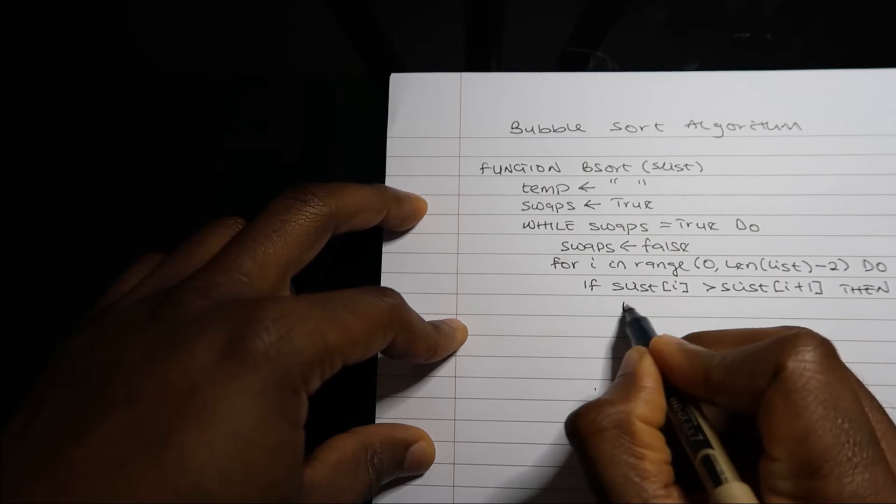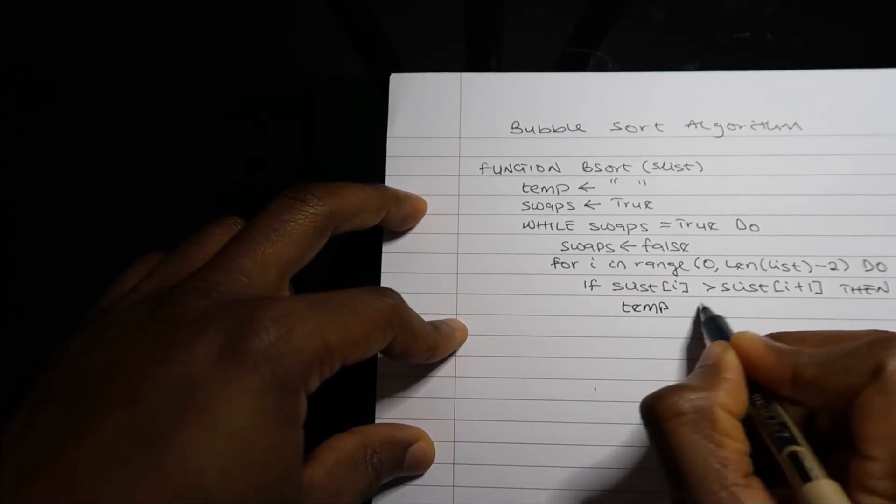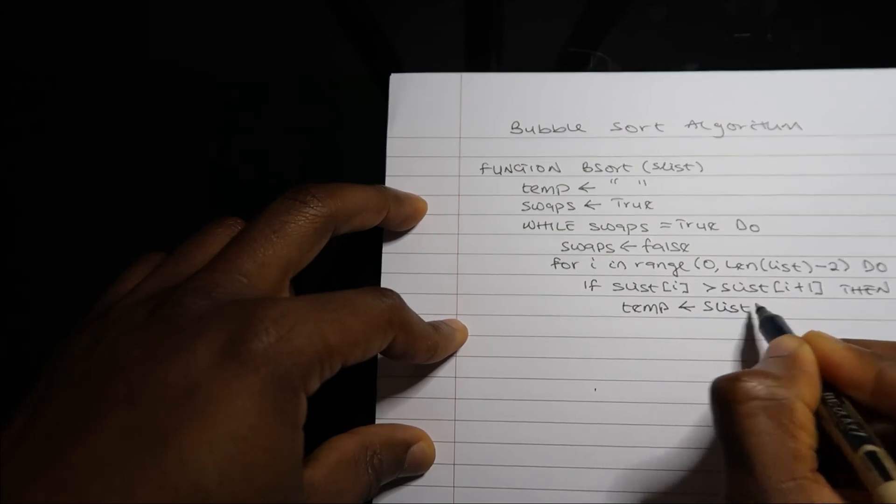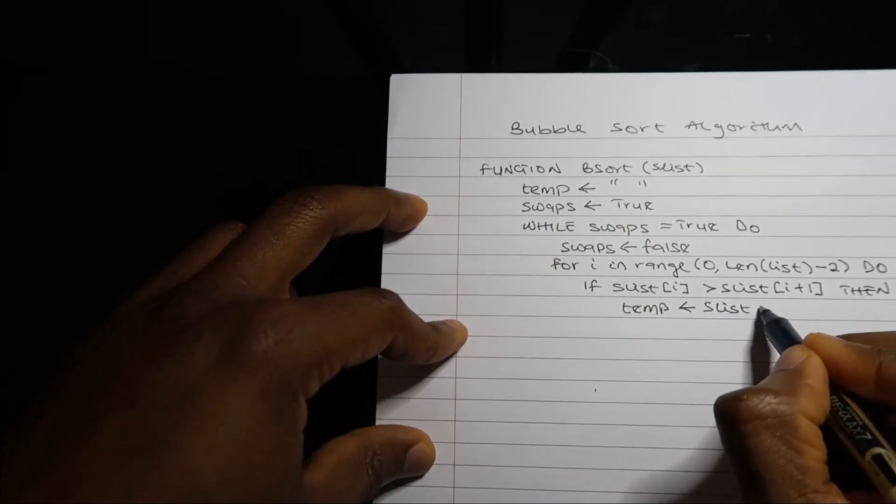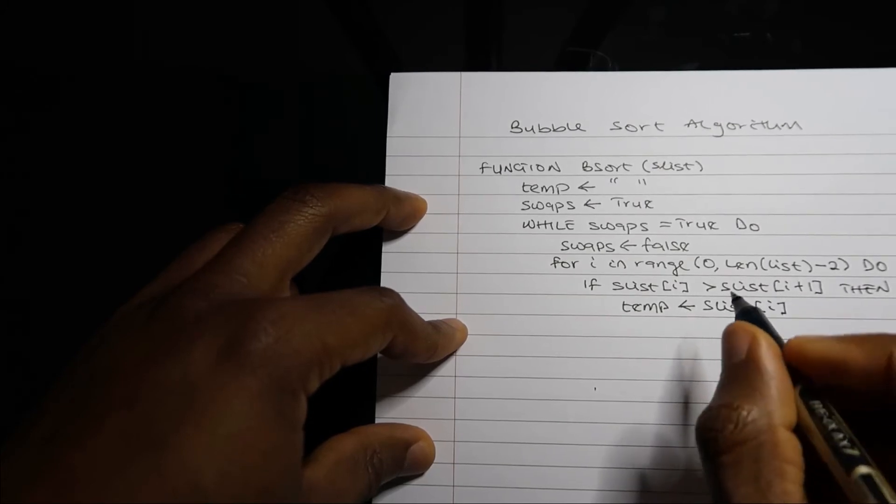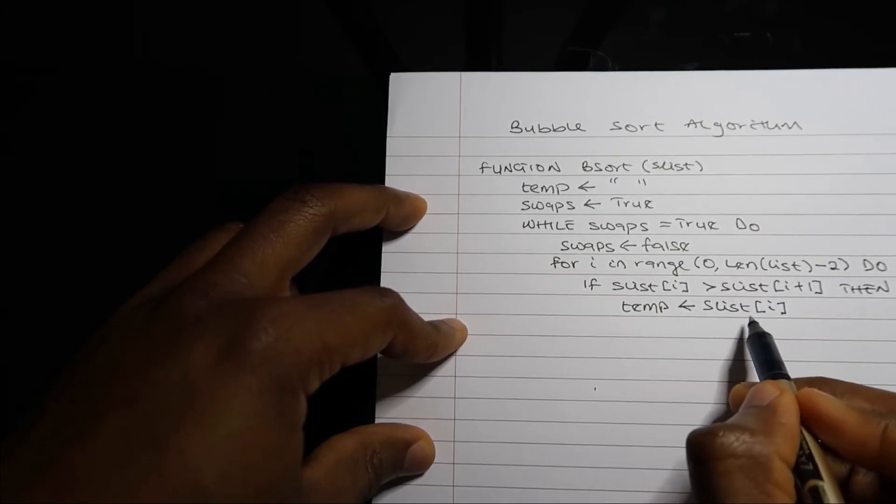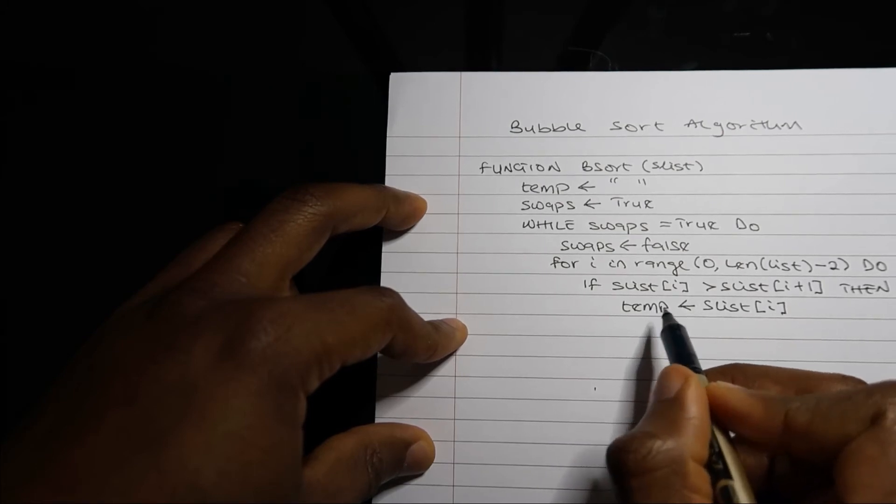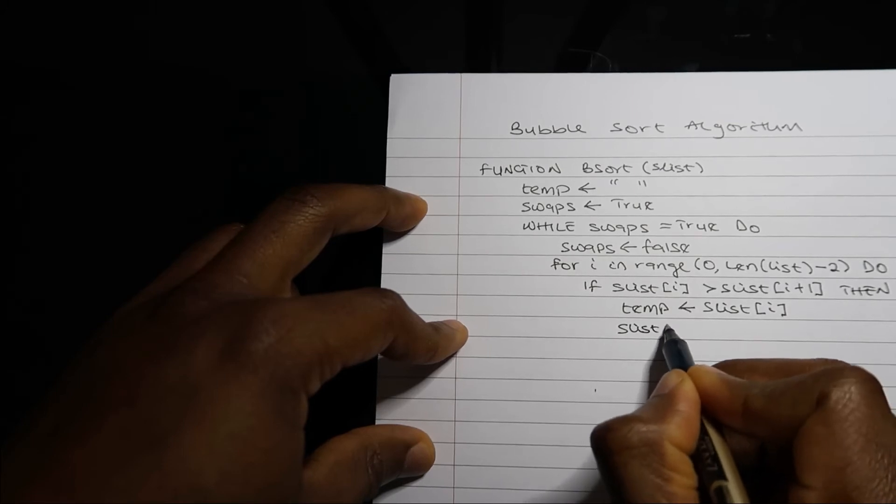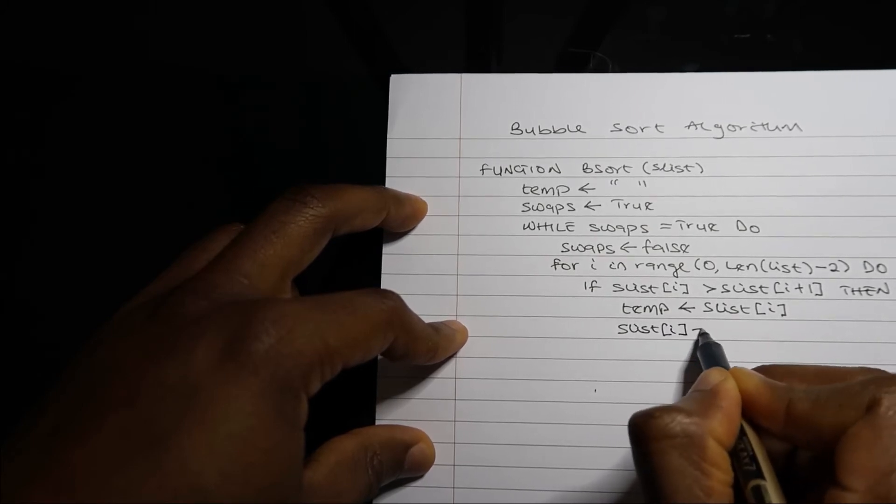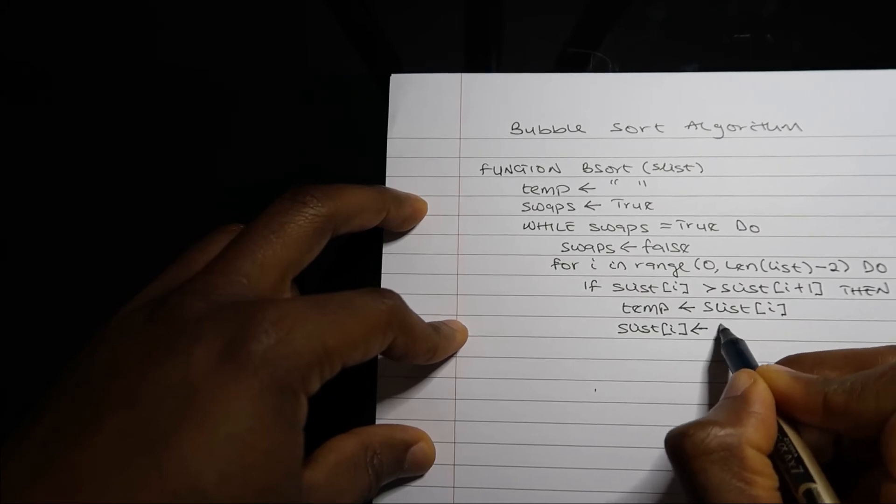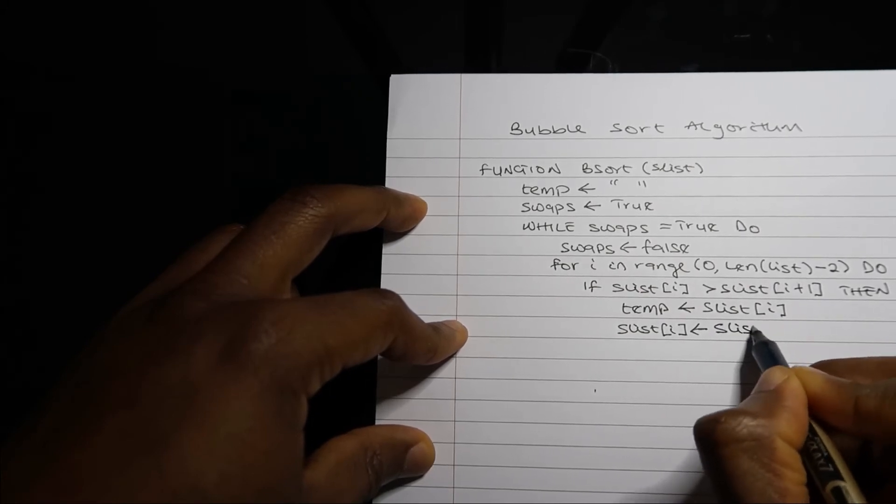Go to my temporary variable and insert one of those values, because I need to swap. I'll put the first value in my temporary variable. This allows me to overwrite that value, so I can go to slist[i] now and then put the value slist[i+1].